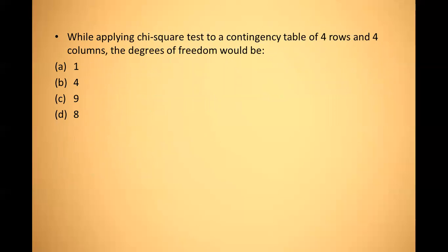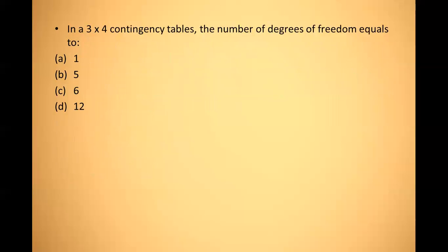Next question: while applying chi-square test to a contingency table of four rows and four columns, the degree of freedom would be? Using the formula (r−1)×(c−1): (4−1)×(4−1) = 3×3 = 9. The answer is 9. Next question: in a 3×4 contingency table, the number of degrees of freedom equals — (3−1)×(4−1) = 2×3 = 6.